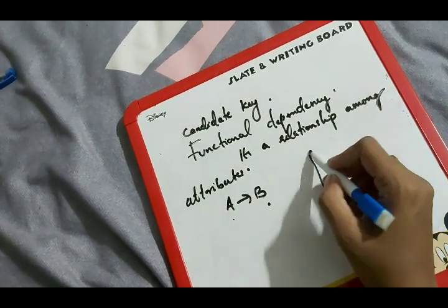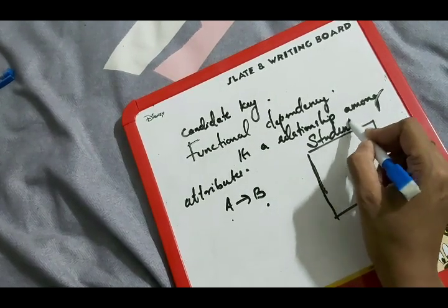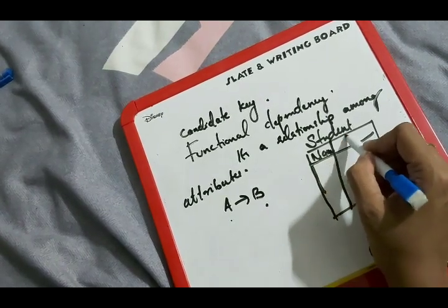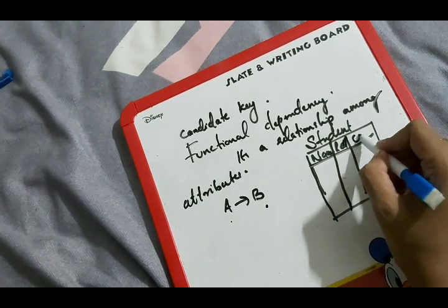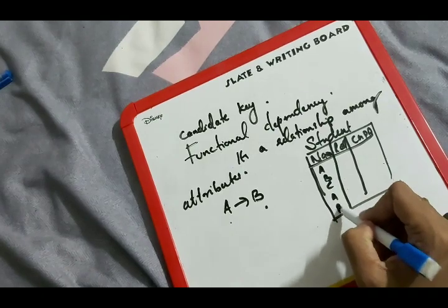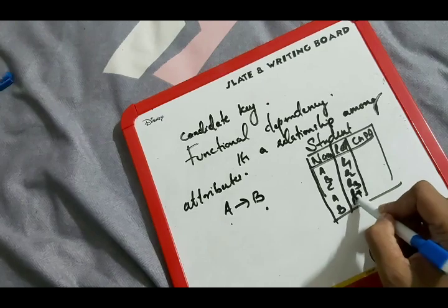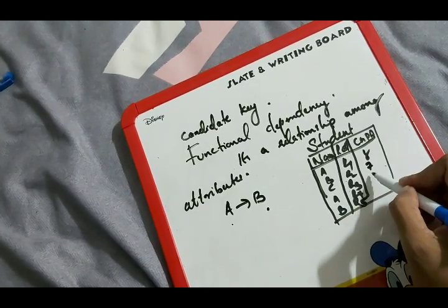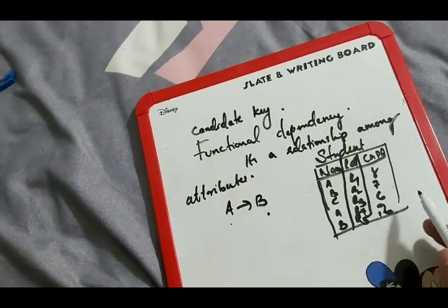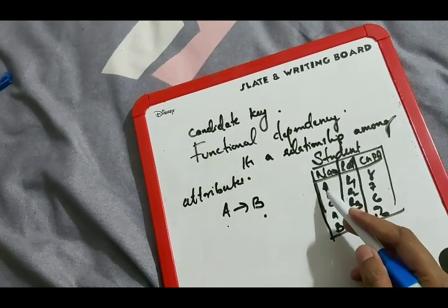For example, consider a student table with attributes: name, roll number, and CGPA. Say we have students A, B, C, A, B with roll numbers R1, R2, R3, R4, R5 and CGPA values 8, 7, 6, 9, 10. In this table, we cannot ask the CGPA of a particular name, or we cannot ask the CGPA of student A.